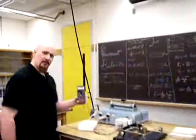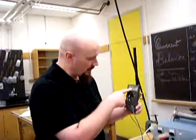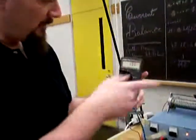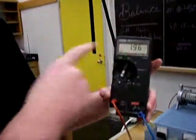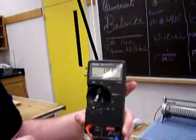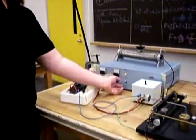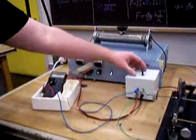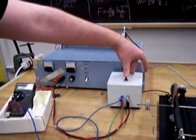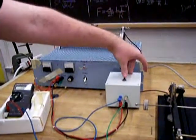Okay, so once it's back at equilibrium, we write down our current. So for this example, 1.96 amps. All right. Then we turn it off, turn the knob down, turn it off, and then we switch this for I2.